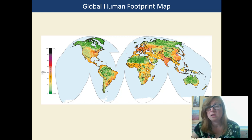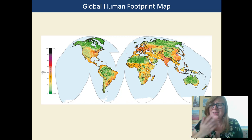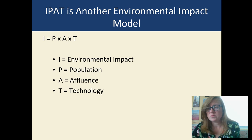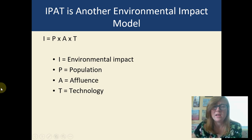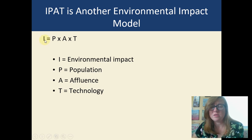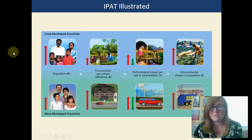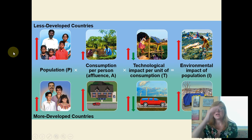Ecological footprint is one way to measure environmental impact. Another way is the environmental impact formula: Impact equals Population times Affluence — the amount of money and things people have — times Technology. Let me show you how that works.